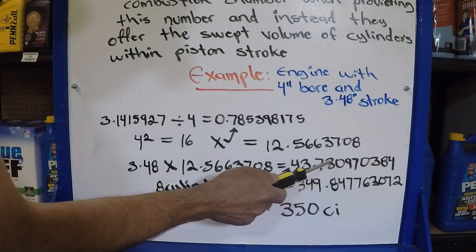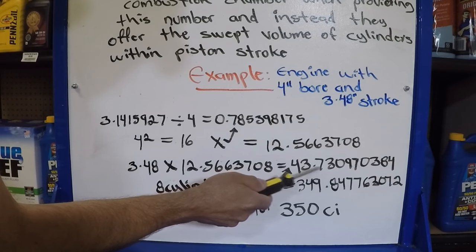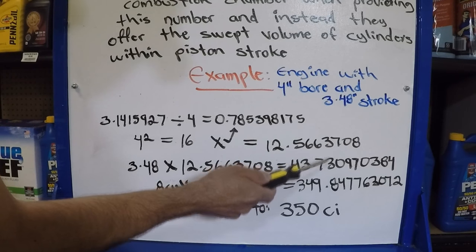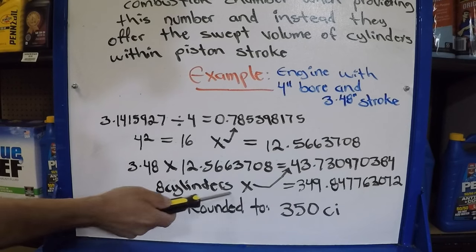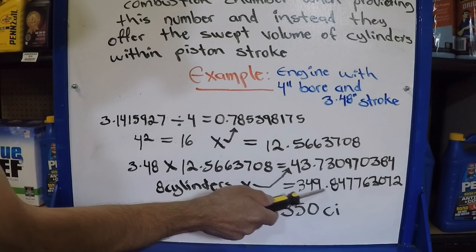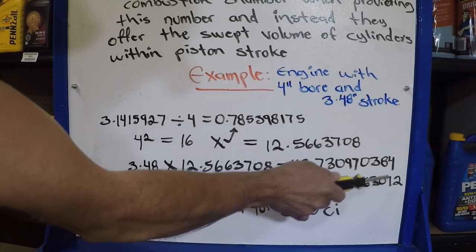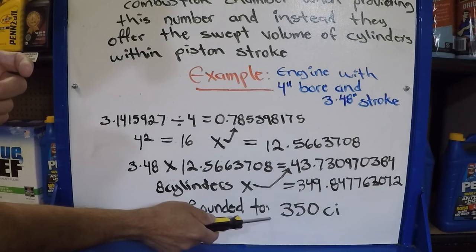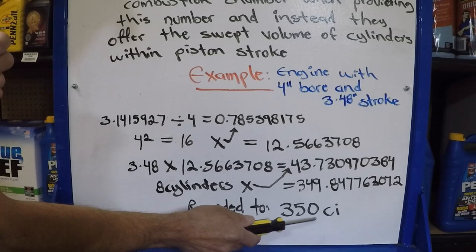Now that would be the swept volume of each cylinder, but we have 8 of them. So we're going to multiply it by 8. So when we multiply that by 8, we end up with 349.847763072, which would be rounded to 350 cubic inch displacement.